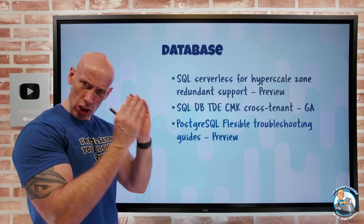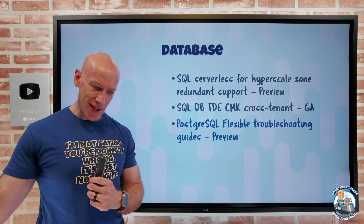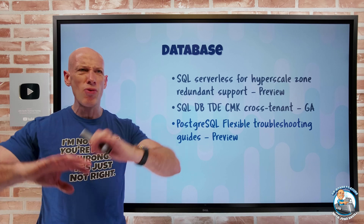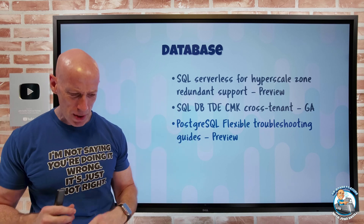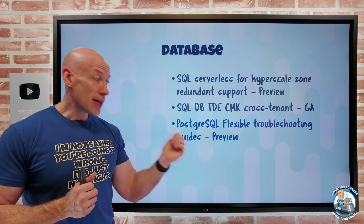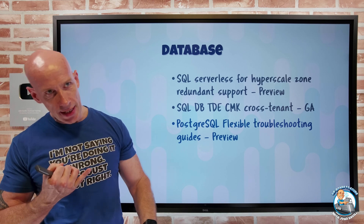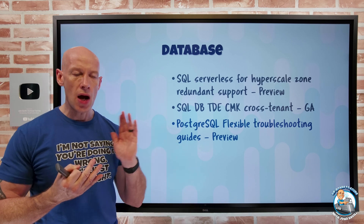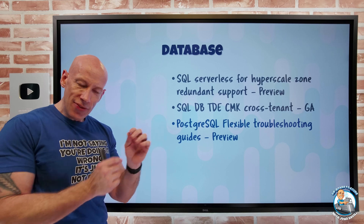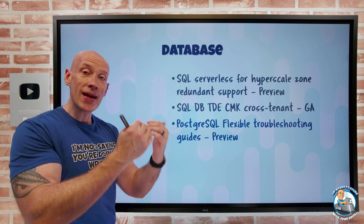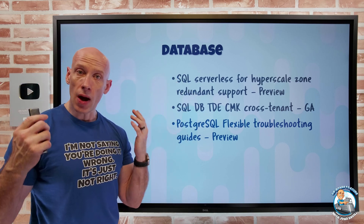PostgreSQL Flexible — which is the go-forward pattern for PostgreSQL and MySQL — now has troubleshooting guides. These are useful for a whole range of issues you might face: high CPU, high memory, high IOPS, auto vacuum issues, and more. They rely on data and telemetry being stored, so you need diagnostic settings, the query store, and enhanced metrics configured. Through the portal in the help section you can walk through these troubleshooting guides, which provide steps and visuals to help you troubleshoot problems.